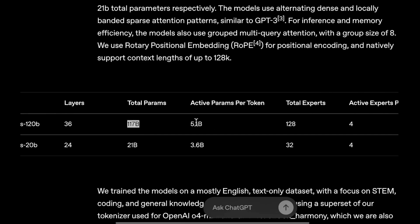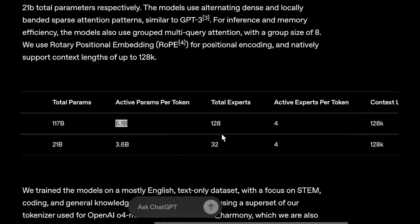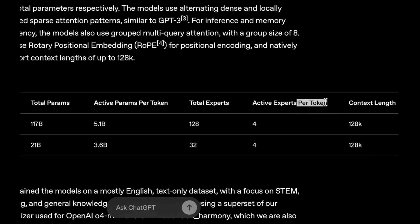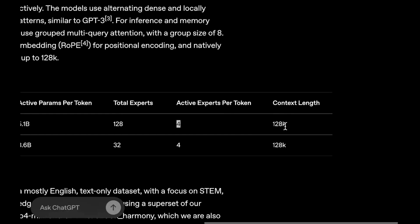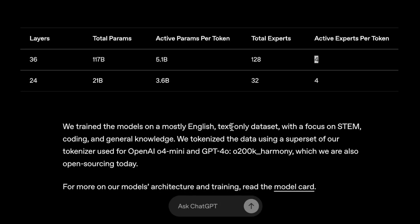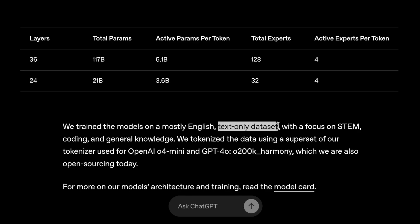At any given time for predicting the next token, it uses 5.1 billion parameters. It has a total of 128 experts, and for every next token to be predicted it uses 4 experts out of those 128. The context length is 128K, which is on the lower side compared to today's models, which give you up to 256K context length. These models are mostly trained on English using text-only datasets.